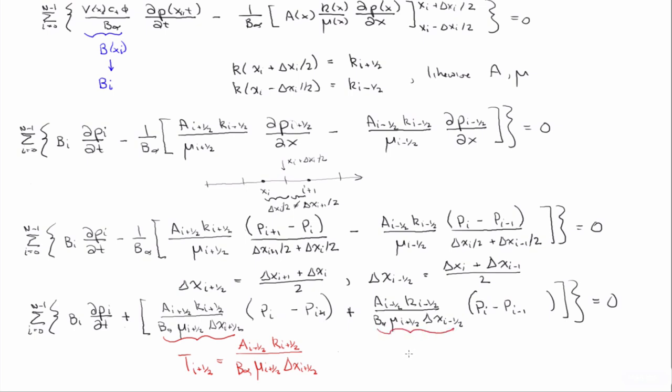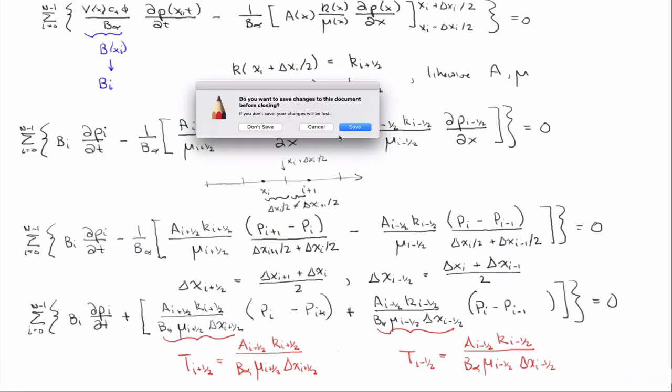And, likewise, this is t i minus a half. So, the next page, we'll write this one more time, now using the t's. And I realize I haven't defined what the inner block, the k i plus a half is. We'll look at that later. That's what we call the inner block permeability.